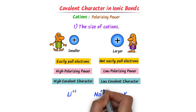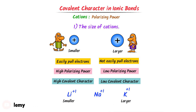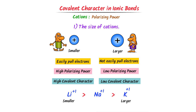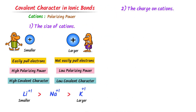For example, which ion has more covalent character among Li⁺, Na⁺, and K⁺? Lithium has the smallest size and potassium has the largest size. So lithium has more covalent character than sodium, and sodium has more covalent character than potassium. The second factor is charge on cations.